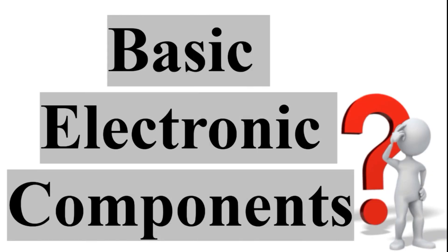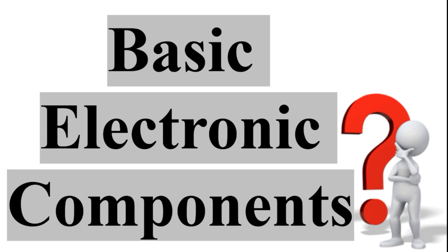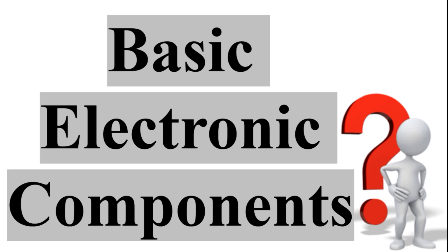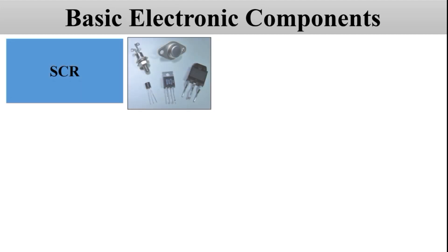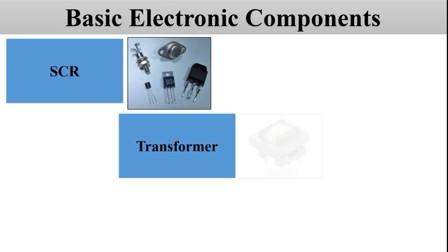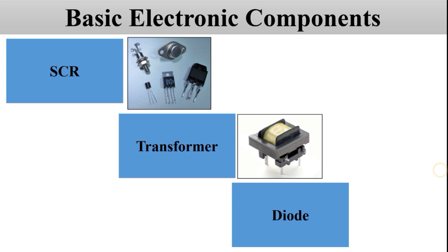In the previous video we have seen the active and passive electronic components like resistor, capacitor, inductor, MOSFET, BJT, FET, etc. In this video we are going to see some other basic electronic devices — SCR, transformer, and diode.